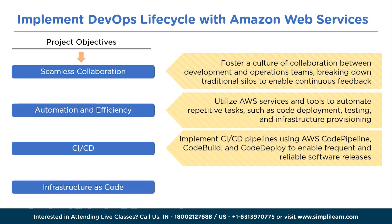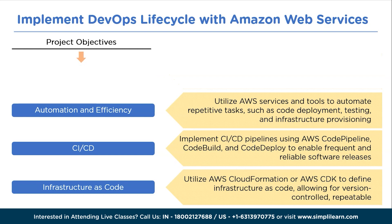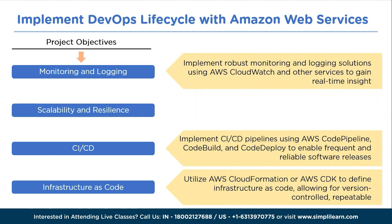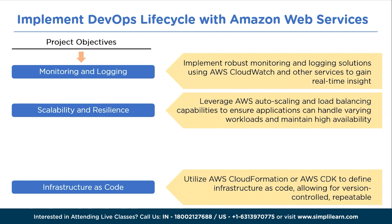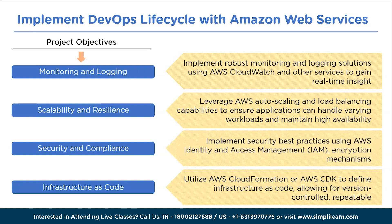The next is infrastructure as code: utilize AWS CloudFormation or AWS CDK to define infrastructure as code, allowing for version-controlled, repeatable, and consistent infrastructure deployments. The next is monitoring and logging: implement robust monitoring and logging solutions using AWS CloudWatch and other services to gain real-time insights into application performance and operational metrics. The next is scalability and resilience: leverage AWS auto scaling and load balancing to ensure applications can handle varying workloads and maintain high availability. And the next is security and compliance: implement security best practices using AWS IAM, encryption mechanisms, and other AWS security features to protect applications and data.